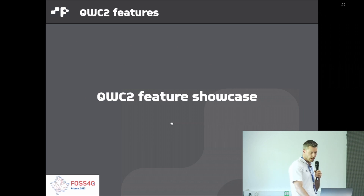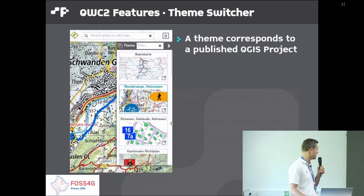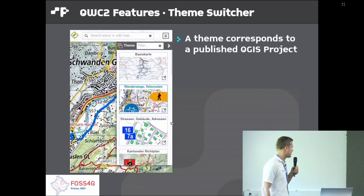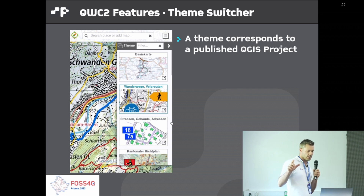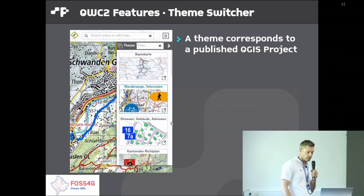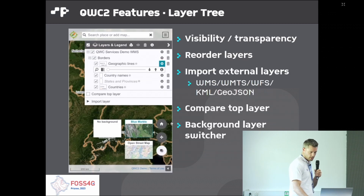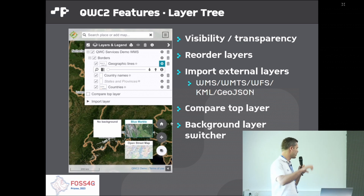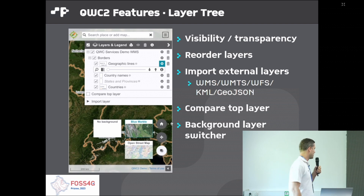Let me show some images of what the application actually looks like. First, there's a theme switcher — the concept of a theme is basically a published QGIS project. You can see small thumbnails and switch through the various published projects. There's a layer tree which allows you to toggle visibility, transparency, and reorder layers. You can import external layers, compare layers, and there's a background layer switcher.